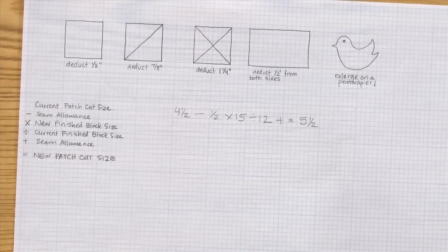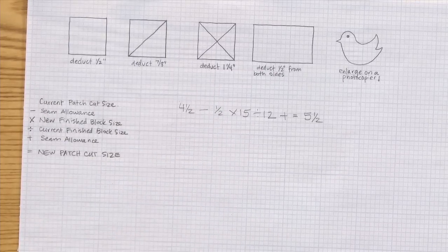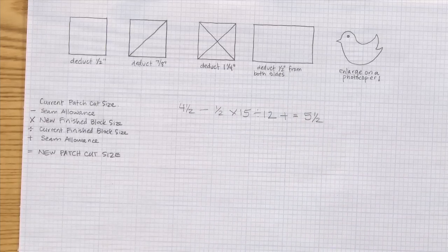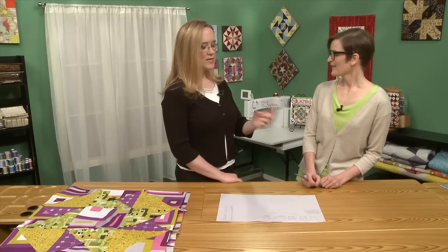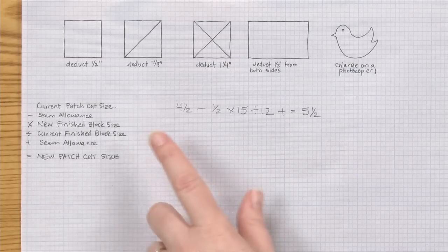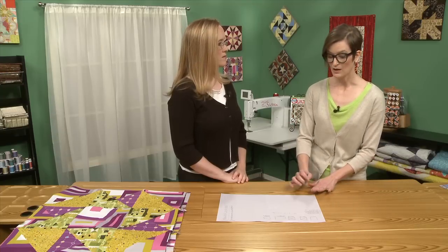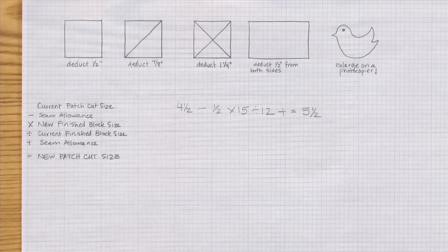The same formula will work for your quarter square triangles, and if you wanted to do rectangles or anything, you just have to do each side separately. With this block, because it's a modified nine-patch, we know we want each unit to finish at five inches now. So it's easy to take that five-inch finished size and say: five plus seven-eighths for the half square triangles, five plus one and a quarter for the quarter square triangles. And as long as you apply this to every patch consistently, you will have no problems changing the size of your block to any size.